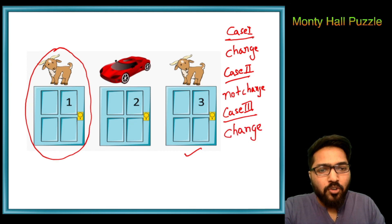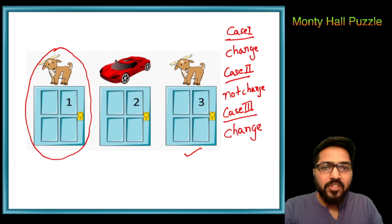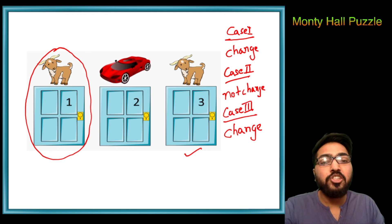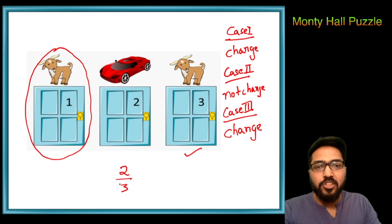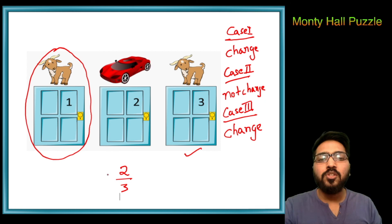So out of these three cases, in two of the cases he will win the car if he changes it. So we can say that there is a two by three probability that if he changes his decision, he will win a car. So the answer is that he should change his choice.